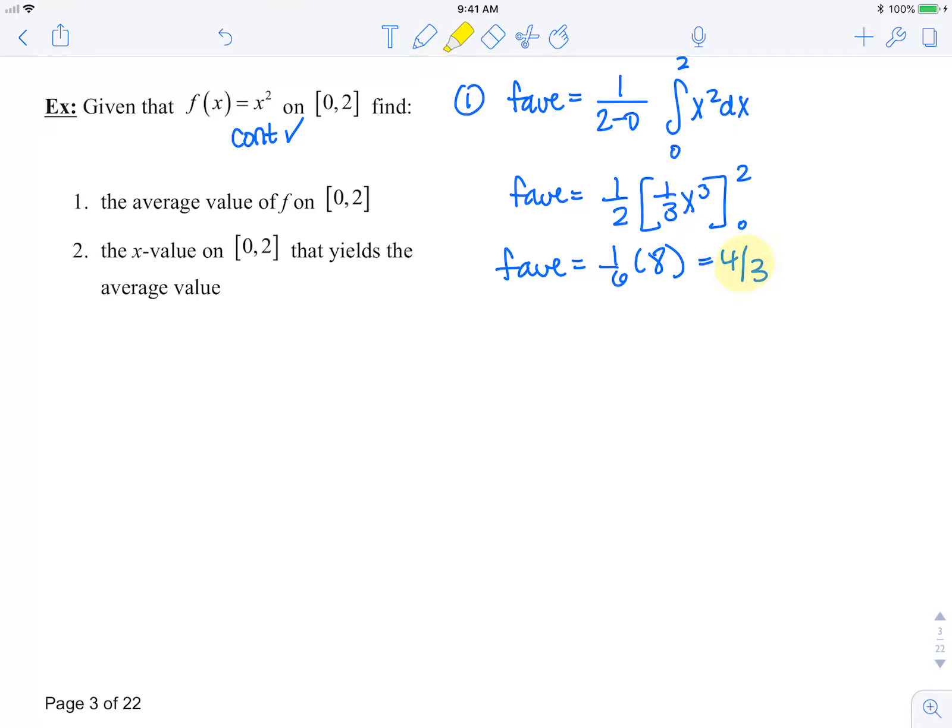So the average y-value over the interval from 0 to 2 is four-thirds. Now for the second part, we want to find the x-value that yields the average value. When does f(x) equal f_av? That's when x-squared equals four-thirds. To solve for x, I'll square root both sides, and we have x is plus or minus 2 over square root 3. Now we want the x-value that falls in this interval. So x is positive 2 square root 3 over 3, which is an element of this interval 0 to 2 that satisfies the average value when you plug it into your initial function.